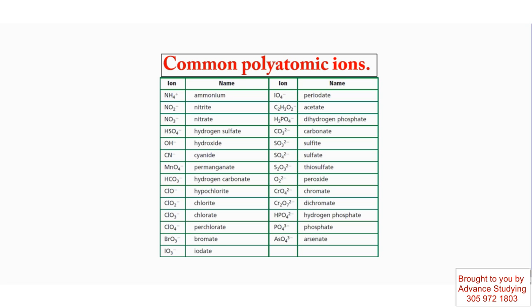Polyatomic ions is a group of elements, in this case a group of non-metals, that combine to form one single unit, and we treat them as such. They have mostly a negative charge, except for one, NH4, which is ammonium. Everything else besides ammonium has a negative charge.